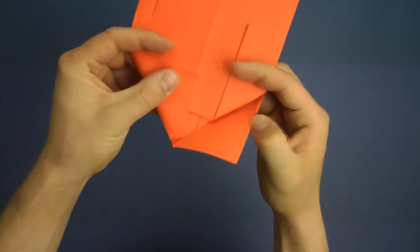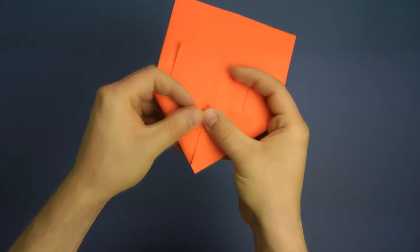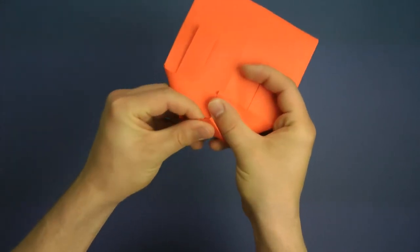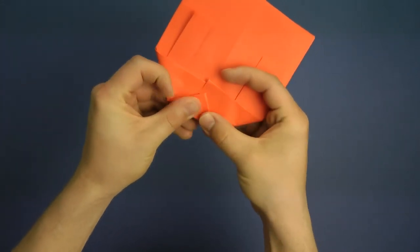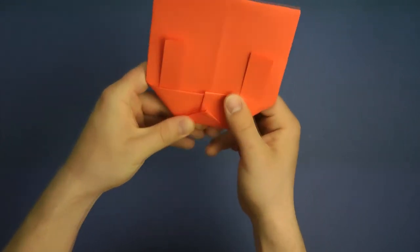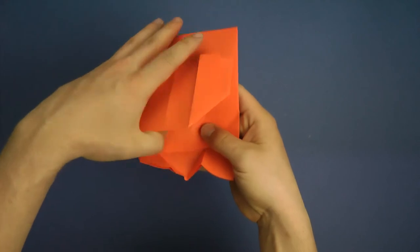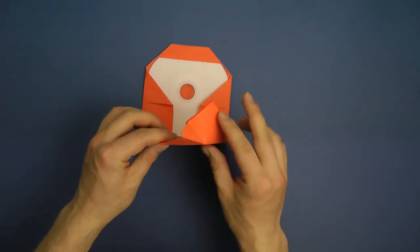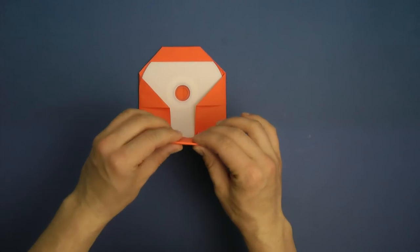Then open it up again. And you see those have a little overlap. That's just fine. And fold in the corner. This is where the top will be closed. Then fold it up again.